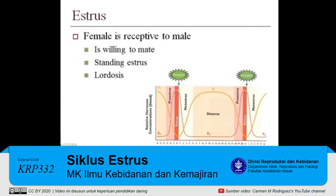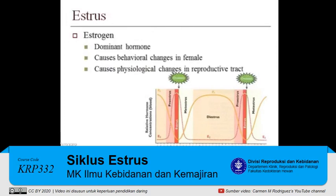Estrus is the time when the female is receptive to the male — in other words, this is the time when the female is willing to mate with the male. During estrus, the female will display several behavioral changes. Many females will stand to be mounted; other females will arch their backs, such as queens. The arching of the back is known as lordosis. The dominant hormone secreted during estrus is estrogen, which causes both the behavioral changes and physiological changes within the reproductive tract of the female.